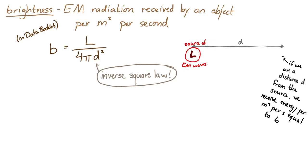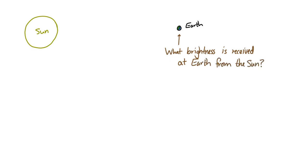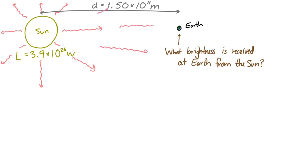Let's imagine we have the sun and the earth, and figure out what brightness is received at the earth from the sun. The luminosity of the sun is 3.9 times 10 to the 26 watts, and the distance between the sun and the earth is 1.5 times 10 to the 11 meters. Using those values, we can determine the brightness of the sun at the location of the earth.